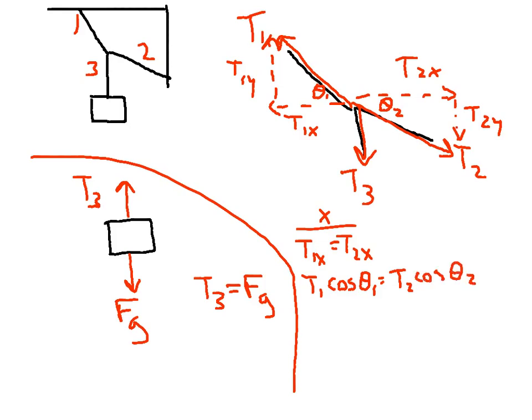Alright, and then in the Y direction we have three forces. In this case we have T1Y is our only up force, and that equals our down forces of T2Y plus T3. So T1Y is going to be T1 sine theta 1 equals T2 sine theta 2 plus T3.